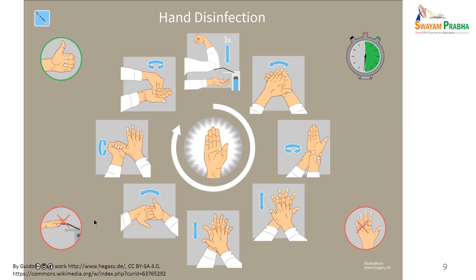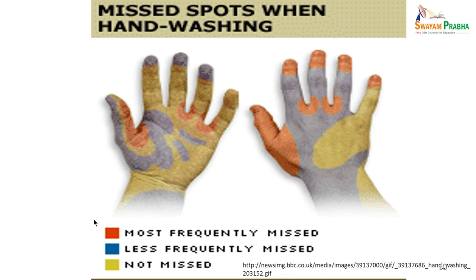Remember, all rings should be removed. These are the spots which can be missed when washing the hands — the red parts represent those most frequently missed, blue or grey is less frequently missed, and the yellow part is usually not missed.